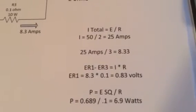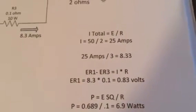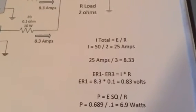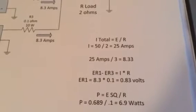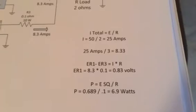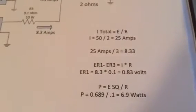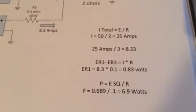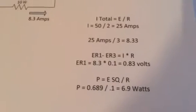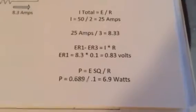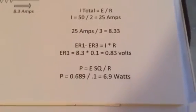So if we look at the voltage drop across each resistor, we'll call that ER1, ER2, and ER3. E equals I times R. So we will have 0.83 volts across each of the resistors. Now that doesn't sound like a lot, but at 8 amps, 8.3 amps, P equals E squared over R. So there's basically E squared. R is only 0.1, but look how many watts. You get 7 watts across each of those resistors.